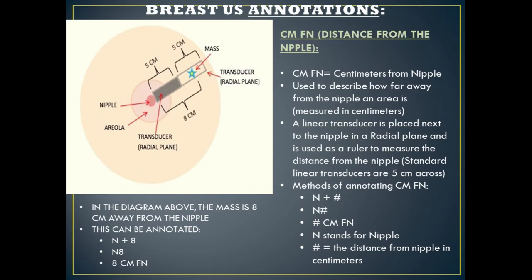There are multiple ways to annotate this. You can say N plus the number, which is nipple plus the number of centimeters from the nipple. Or you can say N and then the number, which is nipple and then the distance from the nipple in centimeters. And then you can also say the number CMFN, which stands for the number of centimeters from nipple.